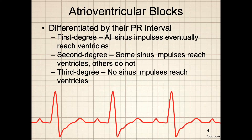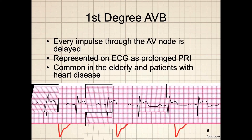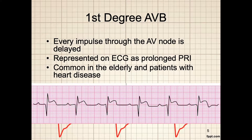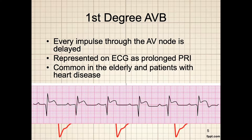Here we have an example of a first degree AV block. Every impulse through the AV node is delayed, and this is represented on your ECG as a prolonged PR interval. It is common in the elderly and patients with heart disease.